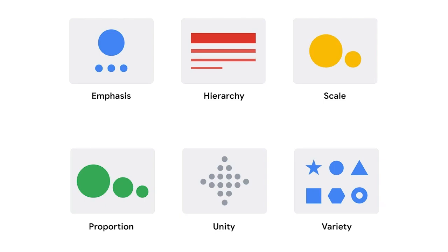Finally, keep in mind the visual design principles you learned about earlier, like emphasis, hierarchy, scale and proportion, and unity and variety. These principles help inform your design decisions. Adhering to them can lead users to have a more positive experience with your mobile app. If any of these terms or concepts are unfamiliar, you can review materials from earlier in the certificate program, which are linked in the course readings.